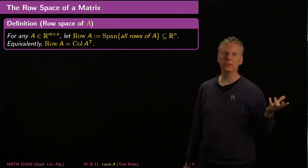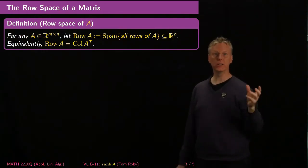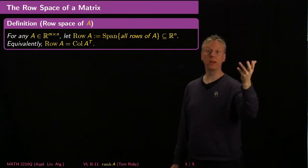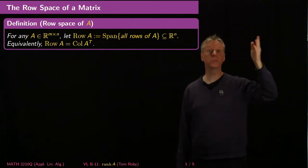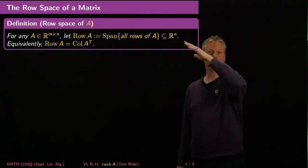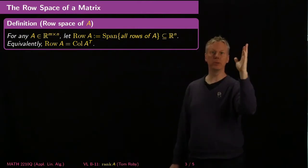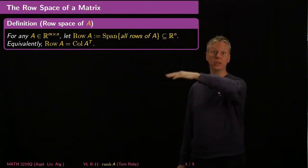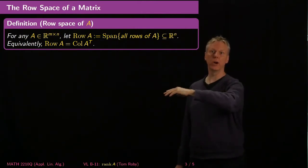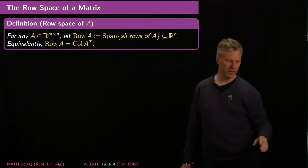Equivalently — and this isn't really a very different concept — you can take the transpose of the matrix and look at the column space, because you'll just be interchanging rows and columns when you do that, and so the span of the rows becomes the span of the columns of A transpose.